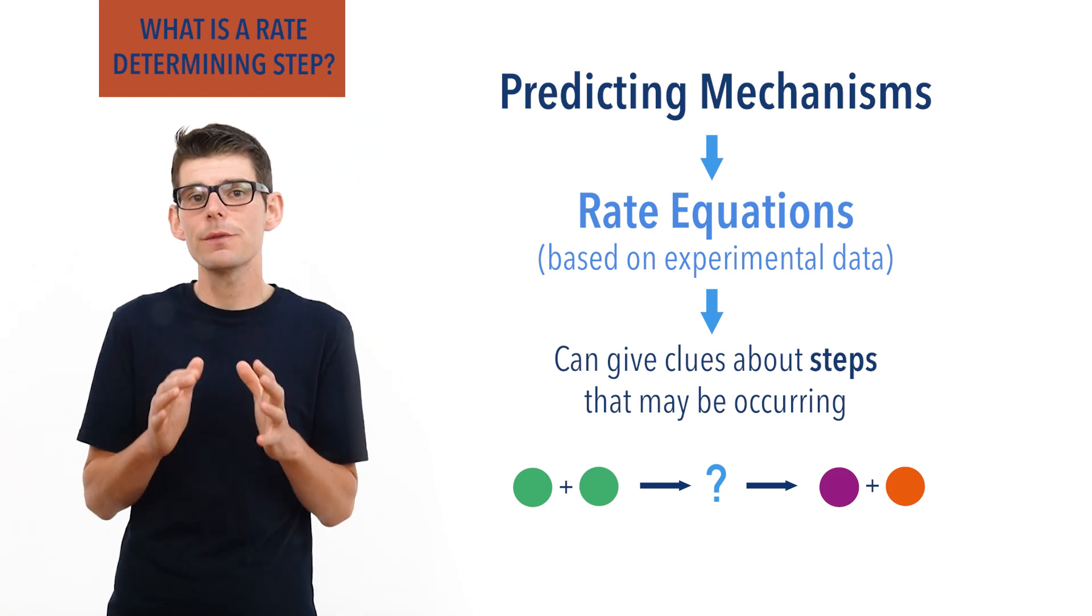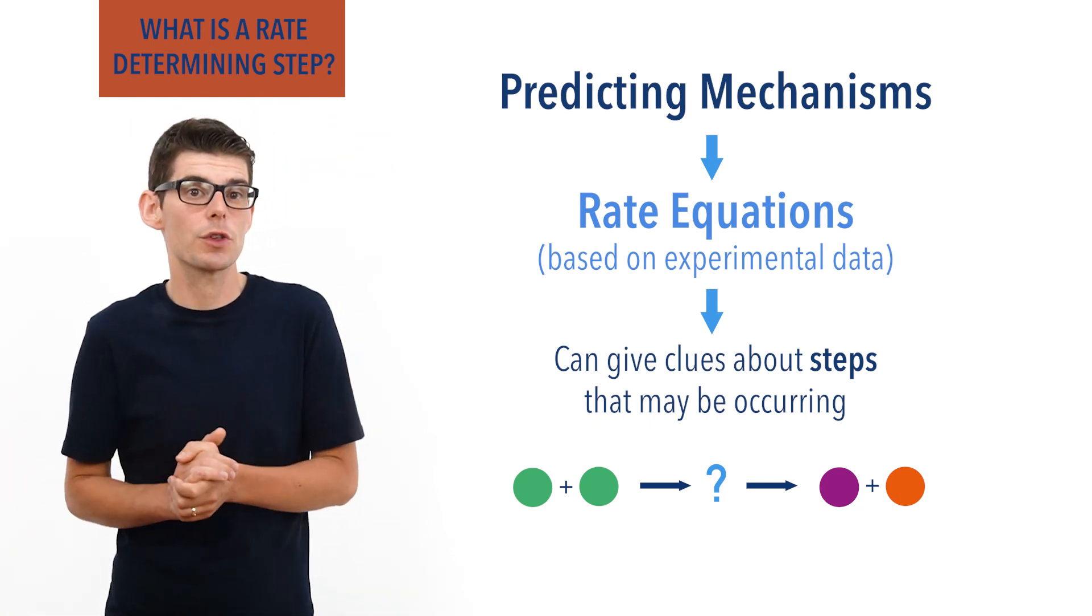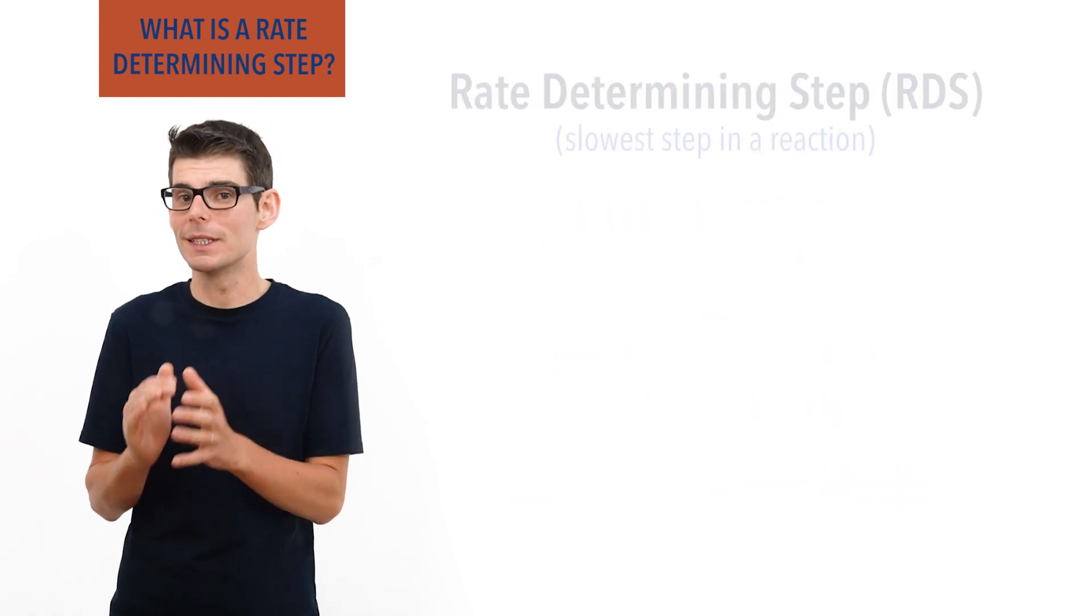The biggest clue we can obtain from such data is information about the slowest step that happens in a reaction. We call this the rate-determining step.